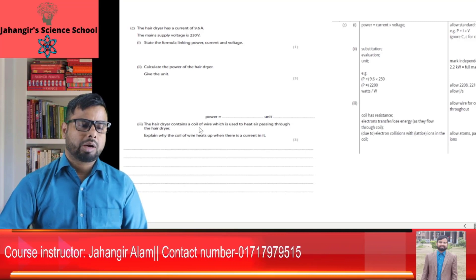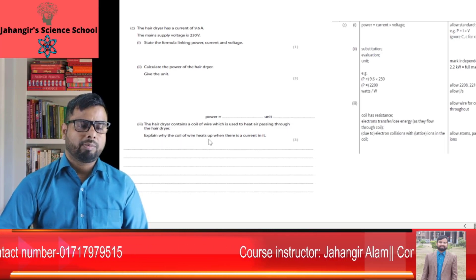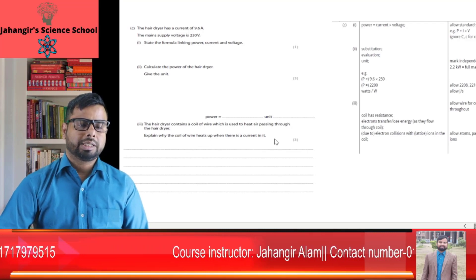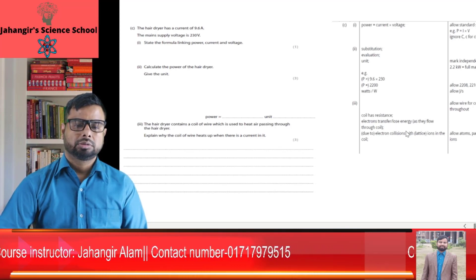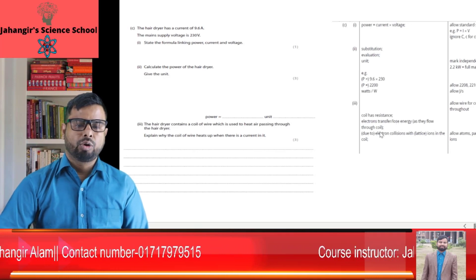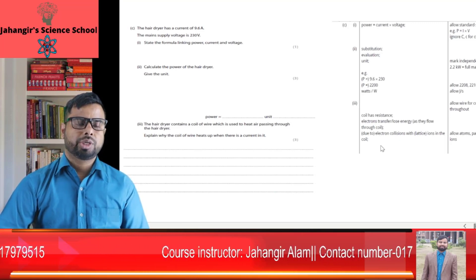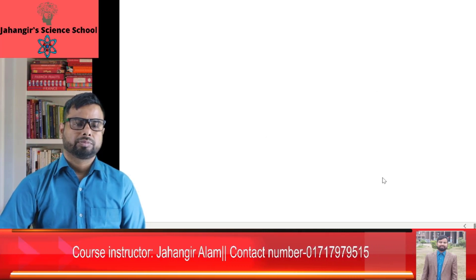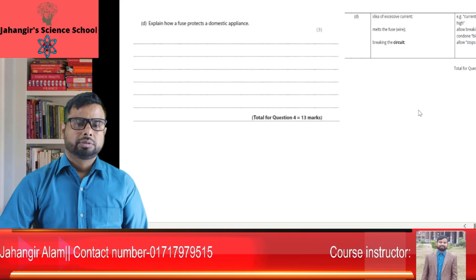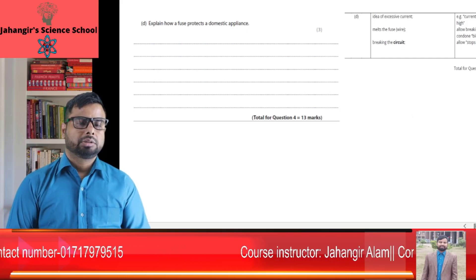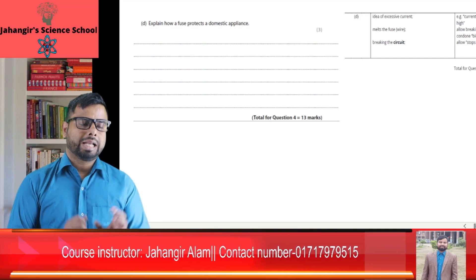The hairdryer contains a coil of wire used to heat air passing through it. Explain why the coil heats up when there is a current in it: the coil has resistance, and as electrons flow through the coil they collide with ions, transferring energy and producing heat. Explain how a fuse protects domestic appliances: when an excessive current tries to flow, the fuse wire melts and disconnects the circuit.